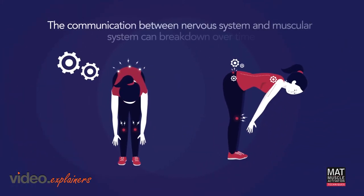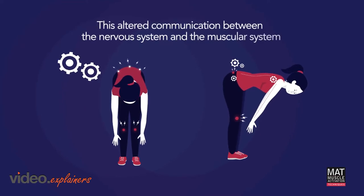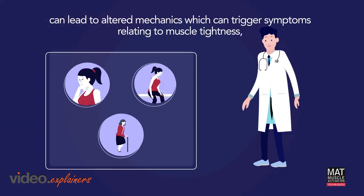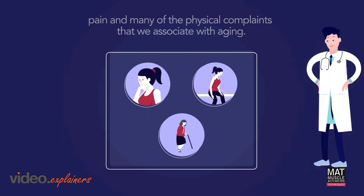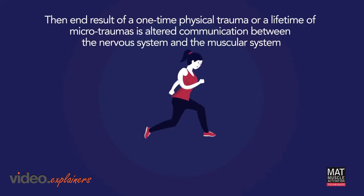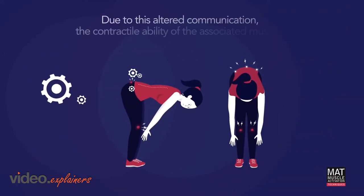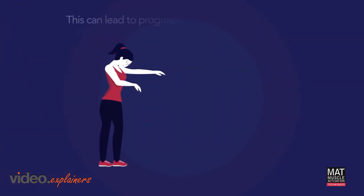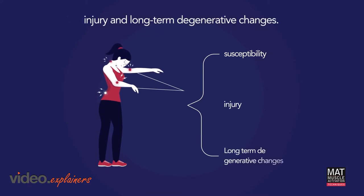The communication between the nervous system and the muscular system can break down over time. This altered communication can lead to altered mechanics which can trigger symptoms relating to muscle tightness, pain, and many of the physical complaints that we associate with aging. The end result of a one-time physical trauma or a lifetime of micro-traumas is altered communication between the nervous system and the muscular system. Due to this altered communication, the contractile ability of the associated muscles becomes less efficient, leading to progressive weakness and an increased susceptibility to pain, injury, and long-term degenerative changes.